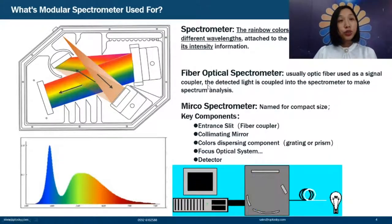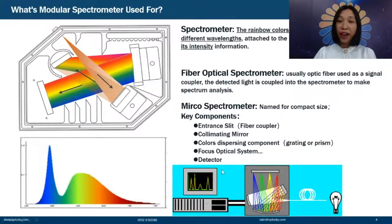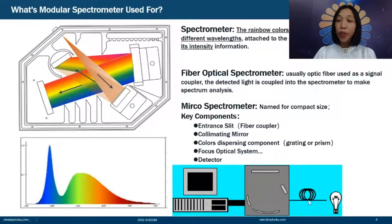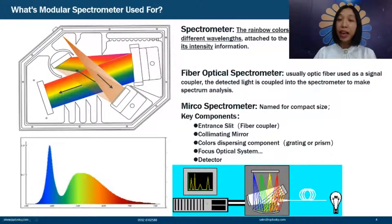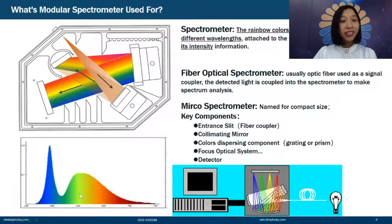You may ask what modular spectrometers are used for. We use a vivid cartoon animation to introduce it. You can see an incandescent light generating white light. When it shoots into the spectrometer and is analyzed, we can see the rainbow colors. The spectrometer exports this data to the PC. We can export a spectrum that tells us both the wavelength information and the intensity information.